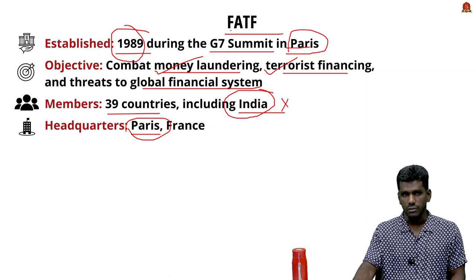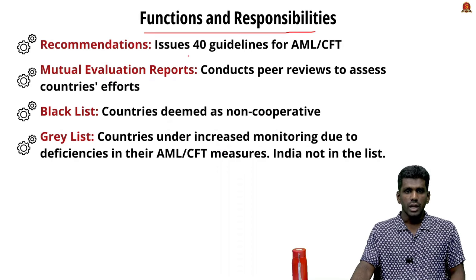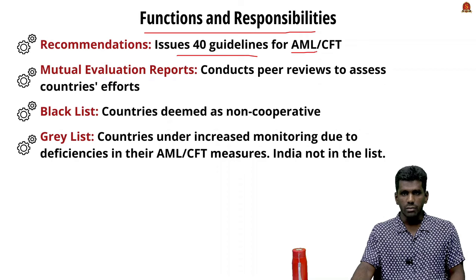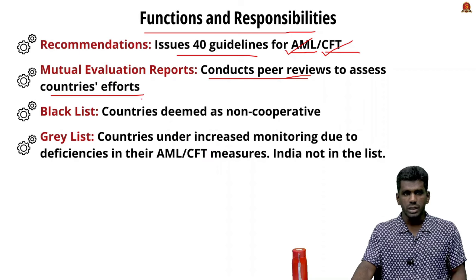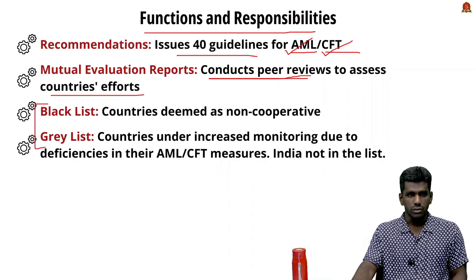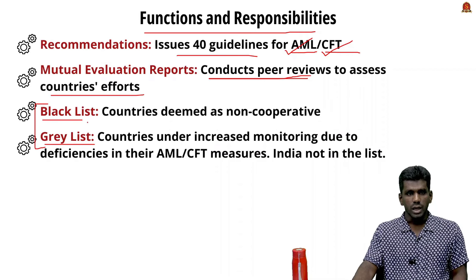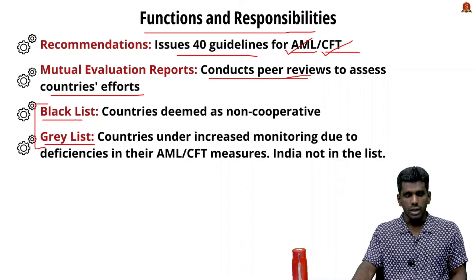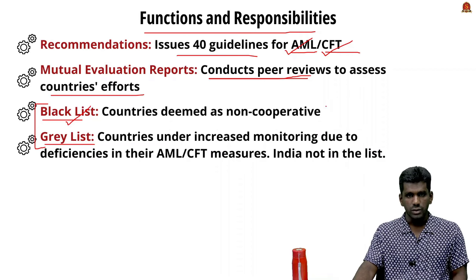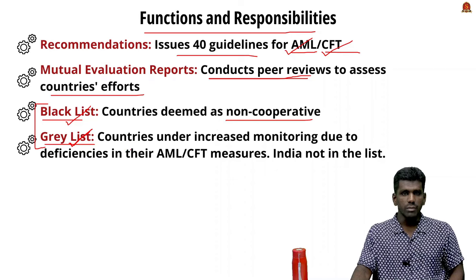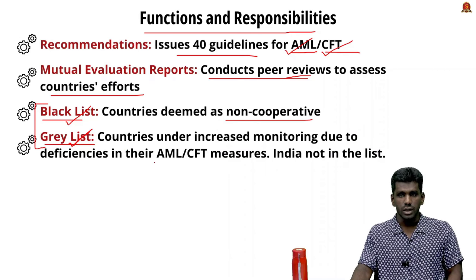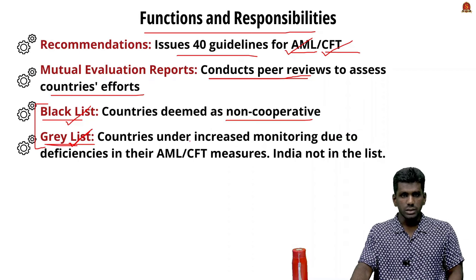FATF's functions and responsibilities include issuing 40 guidelines regarding AML (anti-money laundering) and CFT (combating finance for terrorism), and conducting peer reviews to assess countries' efforts. FATF maintains two lists: a black list for countries that do not cooperate in combating money laundering and terrorist financing, and a gray list for countries that do not properly maintain AML and CFT guidelines, which are continuously monitored. India is not on either list.